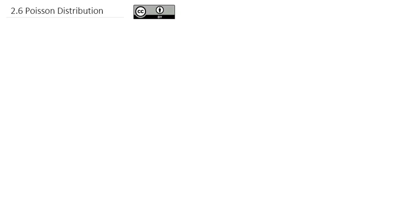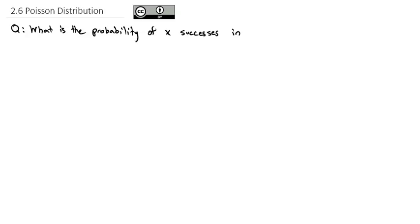A second type of distribution we can work with is called the Poisson distribution, named after a mathematician named Poisson. The question it attempts to ask is very similar to the binomial. The binomial wanted to know the probability of x successes in n trials. Poisson also wants to know the probability of x successes, but instead of in a certain number of trials, it wants to know in a certain amount of time. We use the Poisson distribution to answer that question.